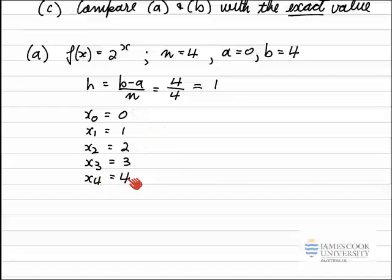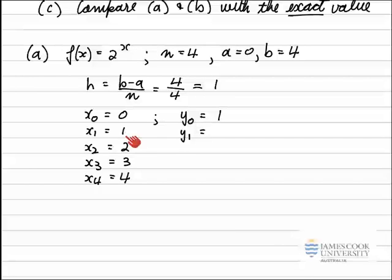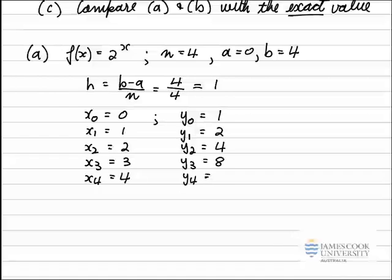For the trapezoidal rule I need the y values, obtained by substituting the x values into f(x) = 2^x. So y₀ = 2⁰ = 1, y₁ = 2¹ = 2, y₂ = 2² = 4, y₃ = 2³ = 8, and y₄ = 2⁴ = 16. These are the y values that appear in the trapezoidal rule.